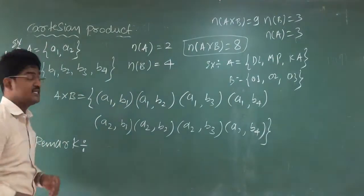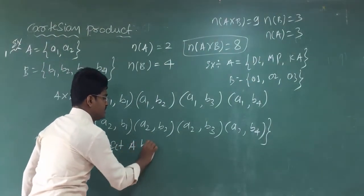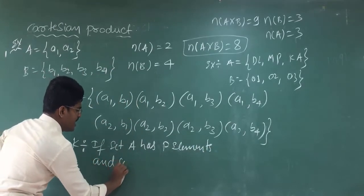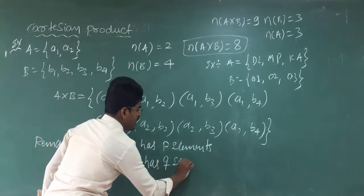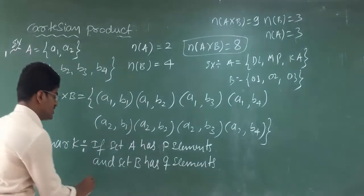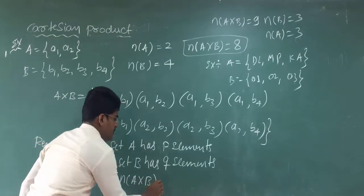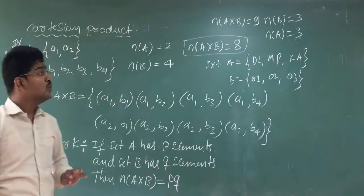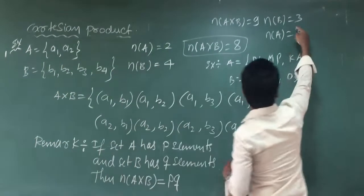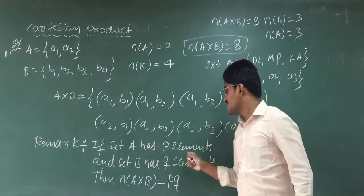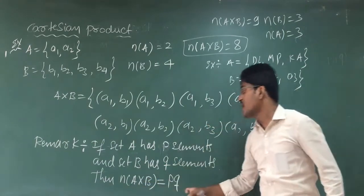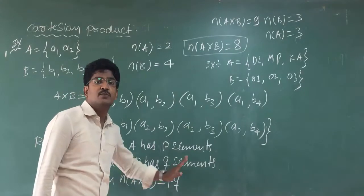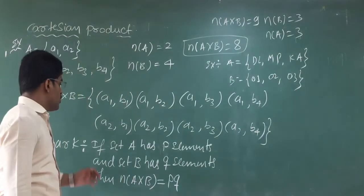From this you can easily arrive at our first remark: if set A has p elements and set B has q elements, then n(A cross B) equals p×q elements. The multiplication of 2 and 4 is 8; the multiplication of 3 and 3 is 9. So n(A cross B) = p×q elements.